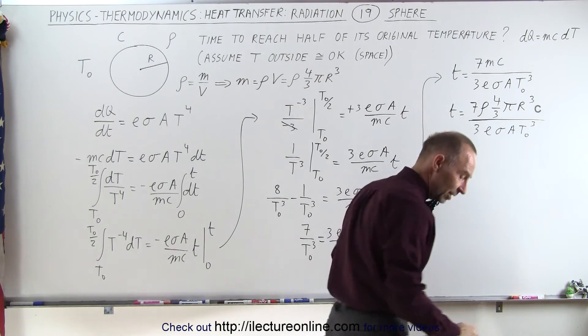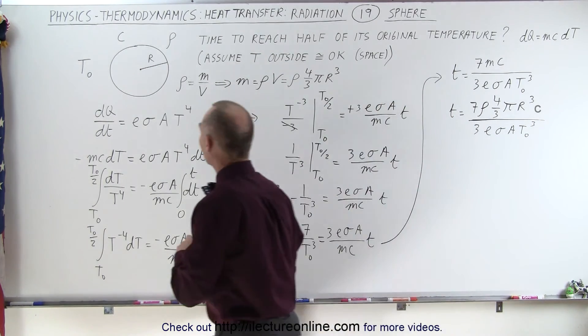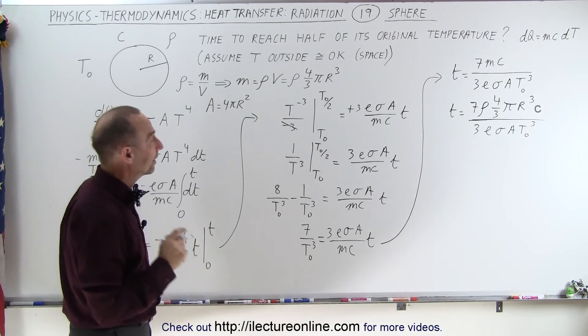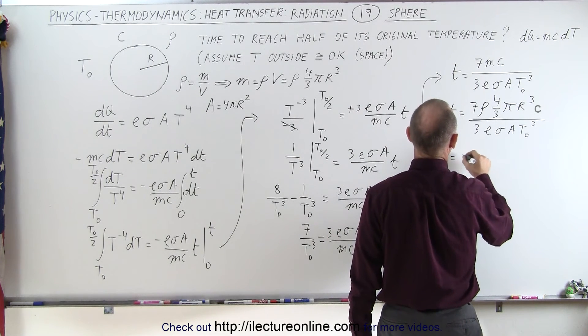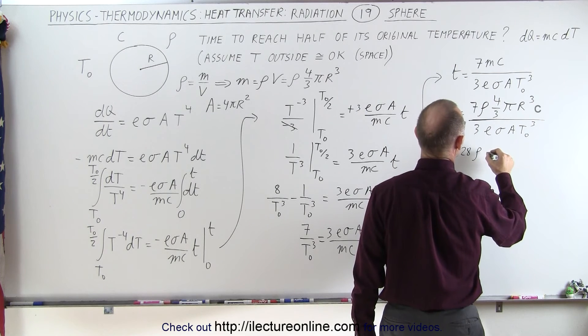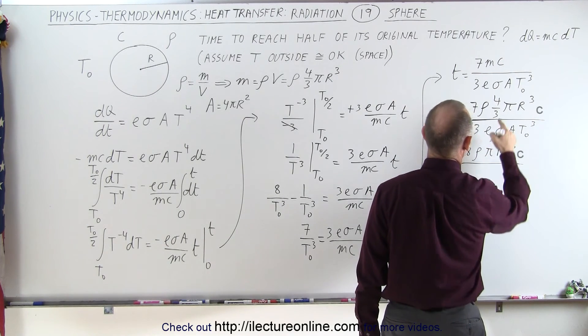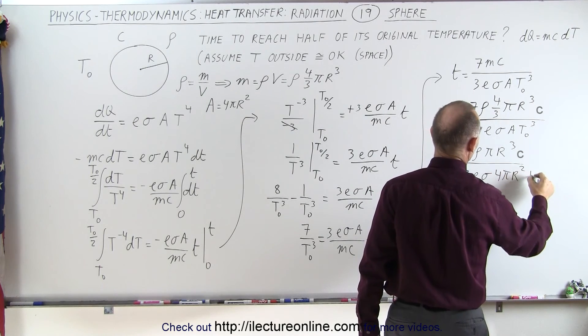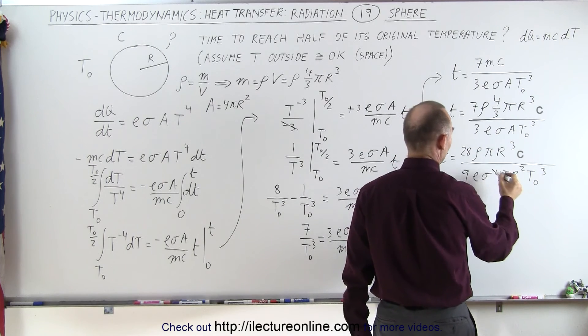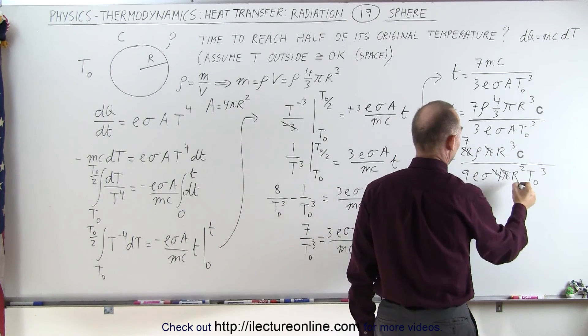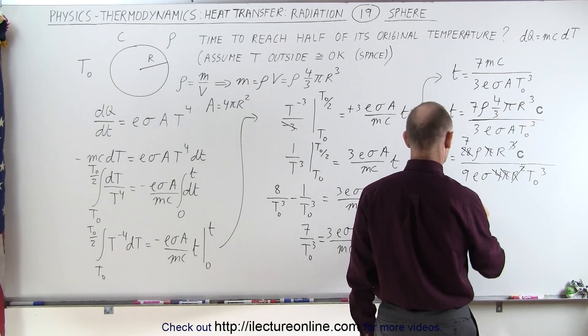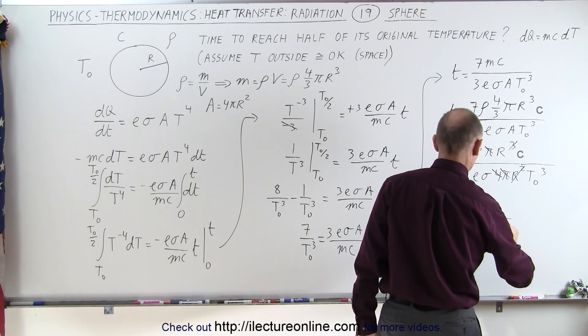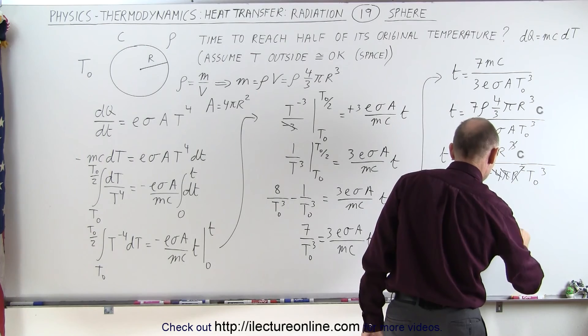We can do one more simplification. Notice we can take the surface area of the sphere and solve for that. A is equal to four pi r squared. Let's replace the area by that. We get t is equal to 28 density times pi times r cubed divided by nine epsilon sigma, instead of A we're going to write four pi r squared times initial temperature cubed. This four cancels one of those seven. The pi's cancel out, r squared cancels out. And so we have t is equal to seven times the density of the sphere times the radius of the sphere divided by nine, the emissivity sigma, and temperature initial to the third power.